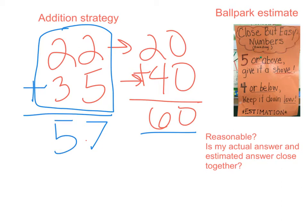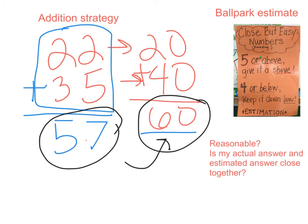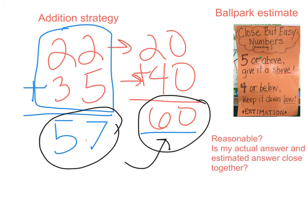What we do next is we check, does our actual answer, fifty-seven, come close to our estimated answer, sixty? We are checking to see if our answer is reasonable. Is fifty-seven a reasonable answer? Yes, it is, because it is close to our estimate of sixty.